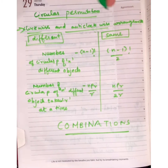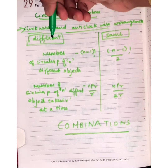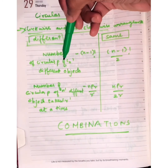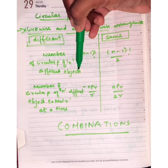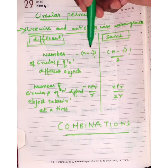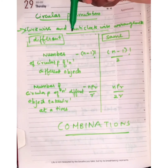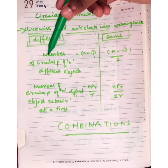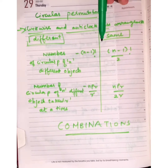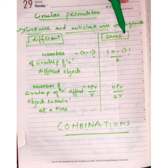When the clockwise and anti-clockwise arrangements are considered different, the formula for the number of circular permutations of n different objects is (n−1)!.